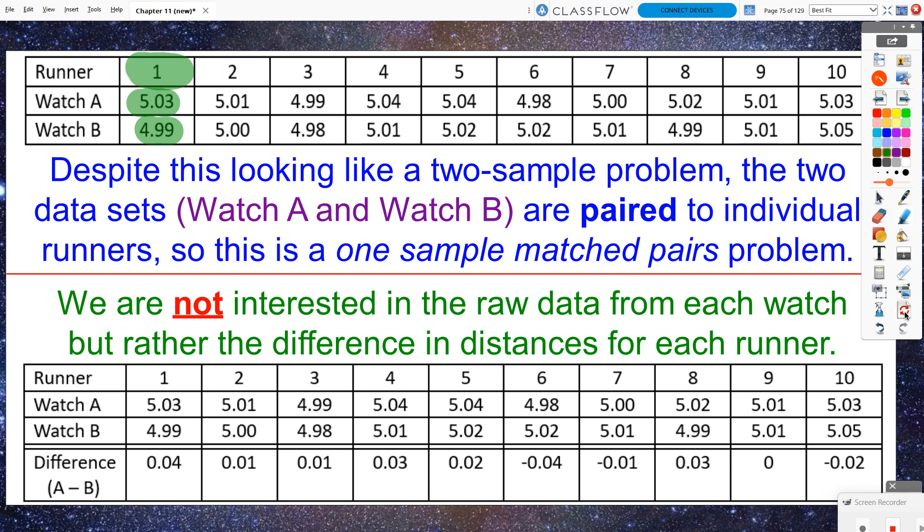This would be a two sample problem if they had said we're going to give watch A to runner one, and then we're going to give watch B to the second runner, a completely different runner. But we want to see are these matching up to be the same exact value on the same person?